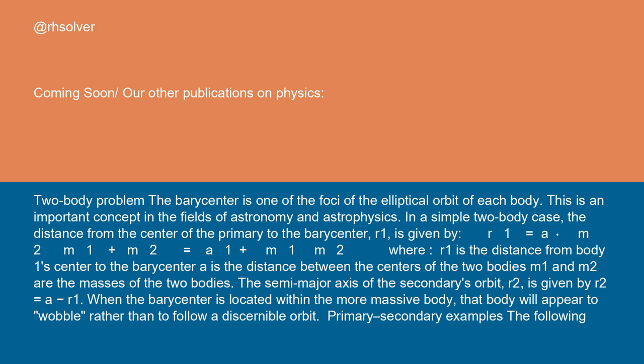R1 = a × M2/(M1 + M2) = a/(1 + M1/M2), where a is the distance between the centers of the two bodies, and M1 and M2 are the masses of the two bodies.